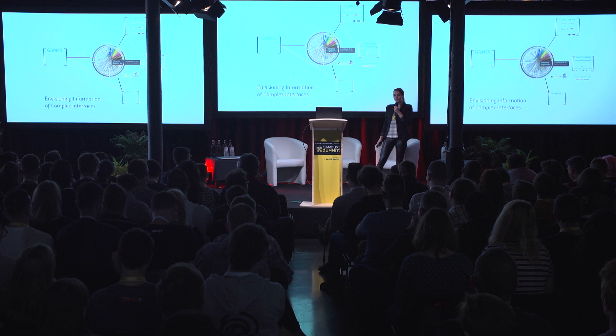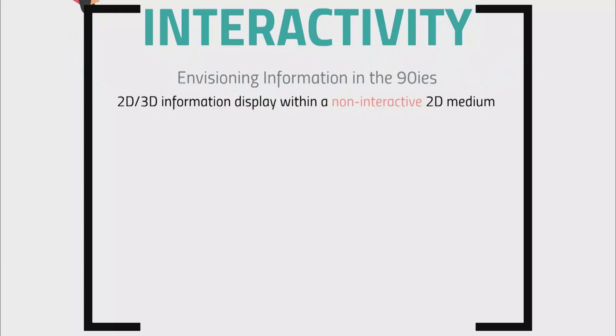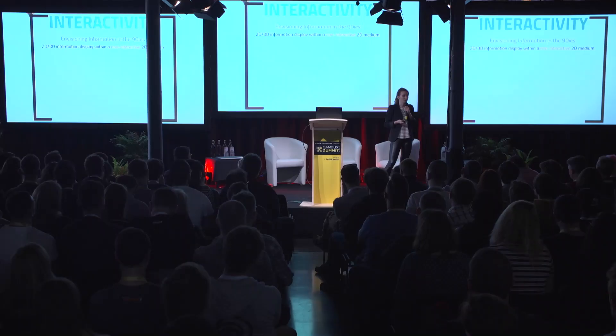The Envisioning Information framework was designed in the 90s, when the mainstream medium for information display was a static canvas — non-interactive, like books, billboards, and posters. Today we use completely different mediums: mobile phones, tablets, and computers — all highly interactive. This gives us a much bigger possibility for using these principles. Before, you could use one or maybe two without cluttering the image. Now we have the possibility to use all of them at the same time, thanks to interactivity.